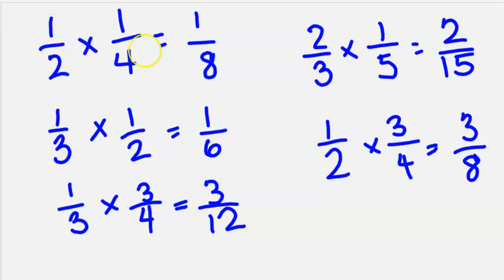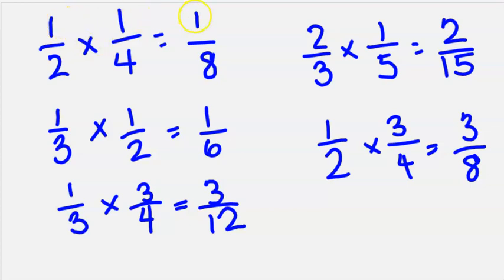I'm noticing that this result is one, and the numerators in the factors are both one. Why do you think that is? I know one times one is one. It wouldn't be addition, because that would be two. But I am multiplying, and the result is one. These other numerators are different — this one has a three in it, and one times three equals three. Over here, two times one equals two. So if I'm noticing a pattern, it's that the numerators are being multiplied, and the product in the numerator is the multiplication of those two factors.